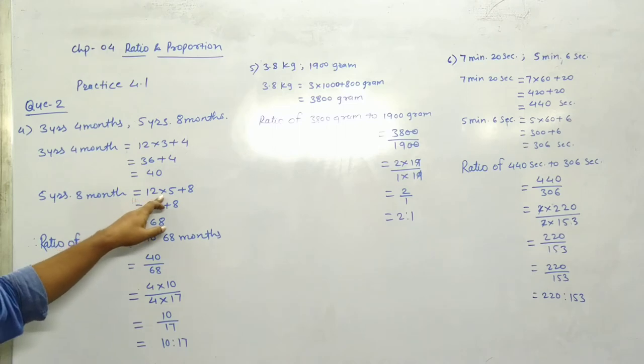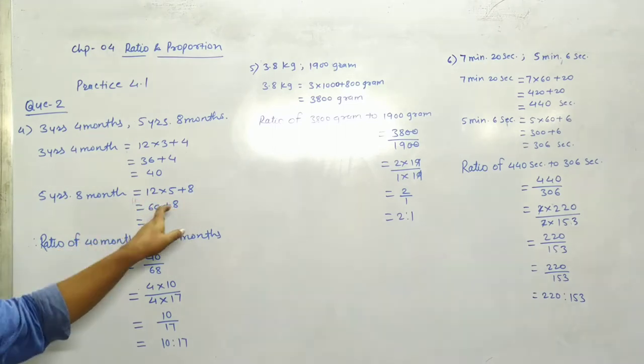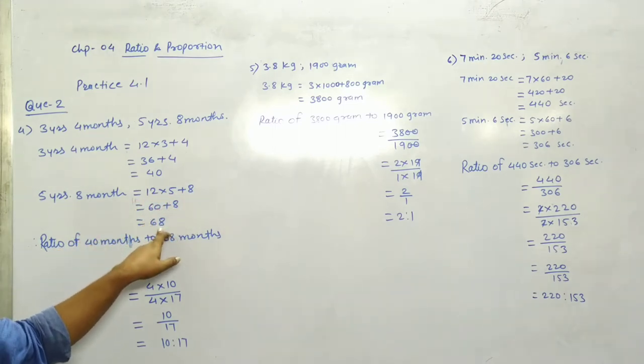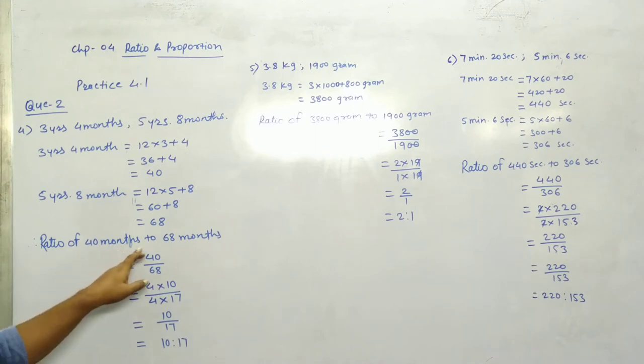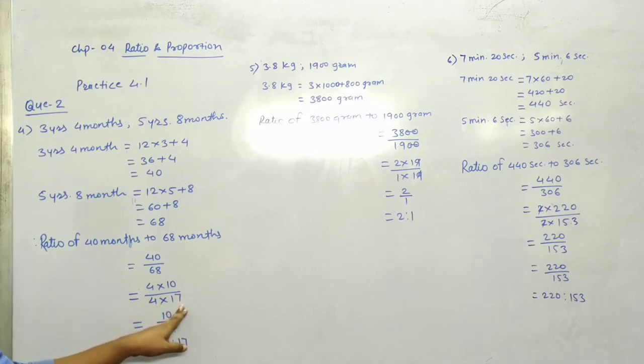Five years, eight months equals 12 into 5 plus 8, which is 60 plus 8, 68 months. So ratio of 40 months to 68 months, 40 divided by 68, 4 into 10, 4 into 17.